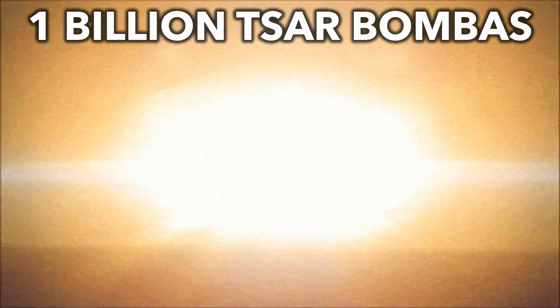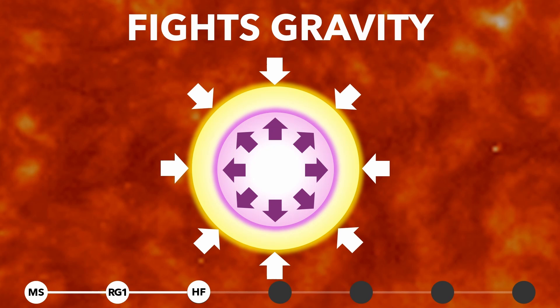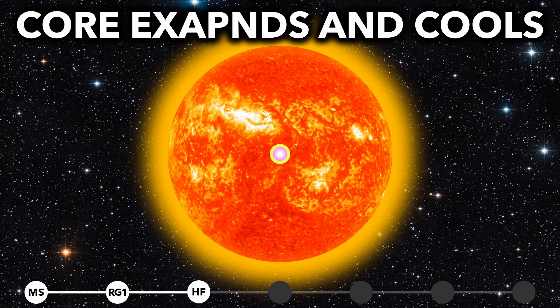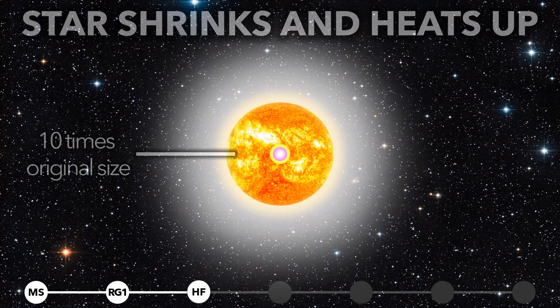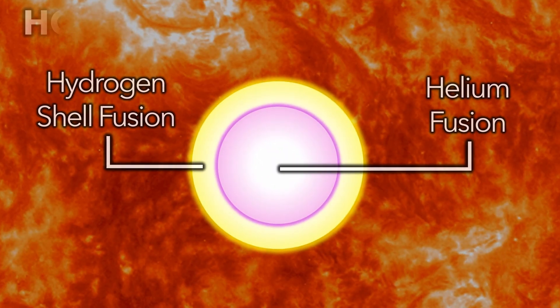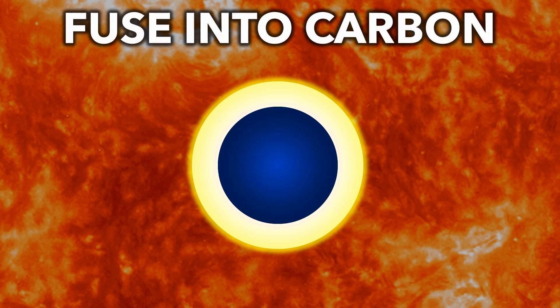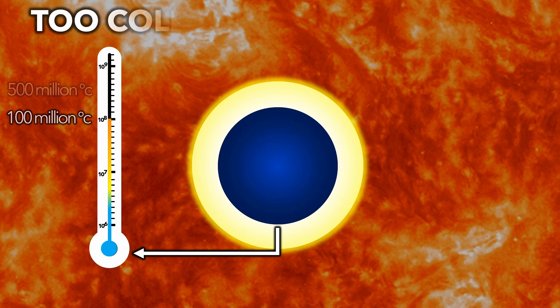the helium core ignites with the energy of one billion large nuclear bombs. The additional fusion pushes against gravity, making the core expand and cool, which ironically makes the star shrink and heat up. This takes about 10,000 years. With extra fusion, the core now burns much faster, taking just 100 million years to fuse into carbon. But the core is too cold to fuse carbon.